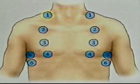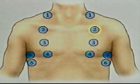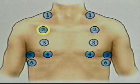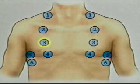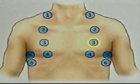Percuss the anterior thorax in symmetrical areas, proceeding from the supraclavicular area down to the sixth rib or below.